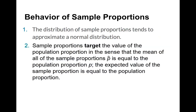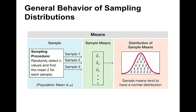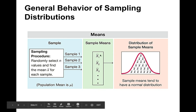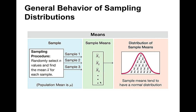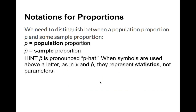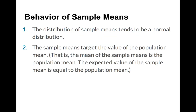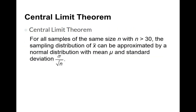The mean of the sample means is kind of a remarkable idea. We take samples of size n, find the mean for each sample, and those means become our data values. If we then take the mean of all those sample means, we get exactly the population mean — not approximately, but exactly, when using all possible samples of size n.